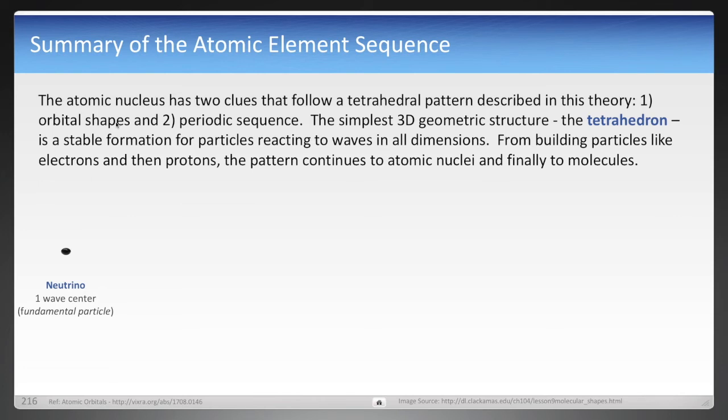Let's summarize the element sequence, and this is actually summarizing everything so far in this theory, beginning with the fundamental wave center. Again, possibly the neutrino. And I really hope that the tetrahedron is now your favorite geometric structure, and it is the simplest 3D structure possible. Because it's seen throughout this theory, as wave centers combine, the electron was found to be 10 wave centers. Then again, the likely structure would be a tetrahedron, and that would be a three-level tetrahedron.